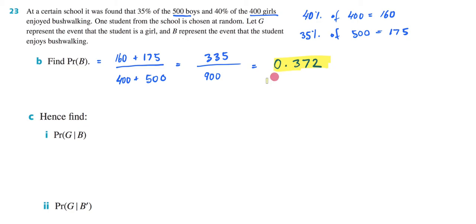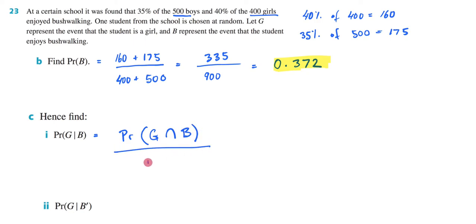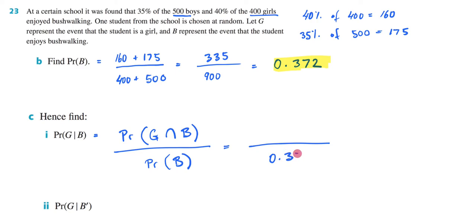Let's now move on to Part C, which is asking us to find the probability of selecting a girl given that they enjoy bushwalking. The first thing I'm going to do is write down my formula. What it's asking us to find is the probability of girl intersection with enjoying bushwalking over the probability that we select someone who enjoys bushwalking. We already figured out the probability of B — it's 0.372 — so let me put that in there.